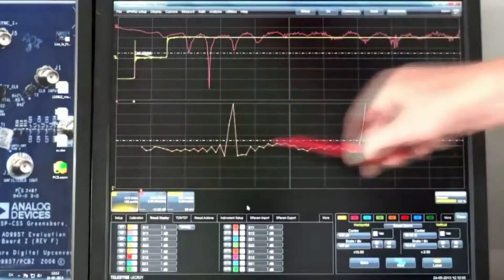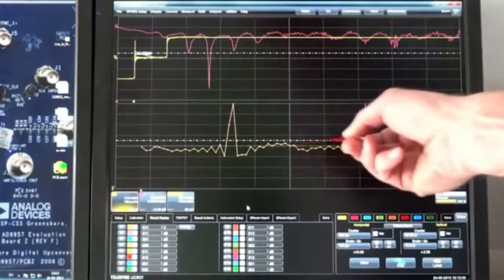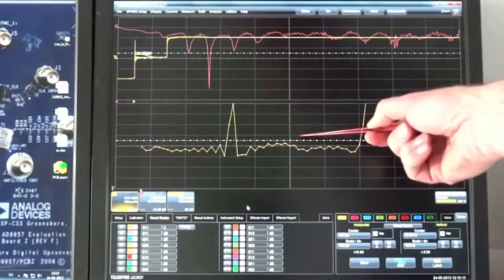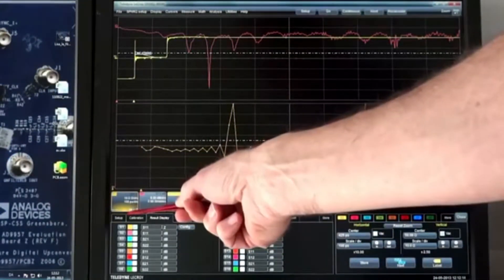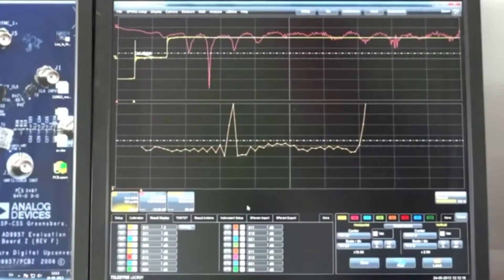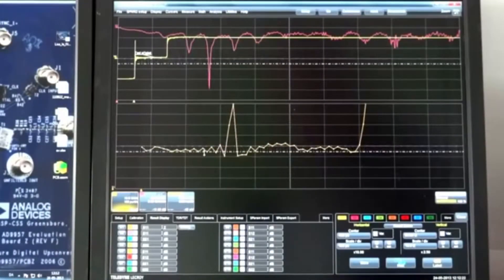So this whole curve is in ohms. The center line here is 50 ohms. The cursor right now is placed at 55 ohms, so that's plus 10%. Let me pull the cursor down to minus 10% so you can see where that is.